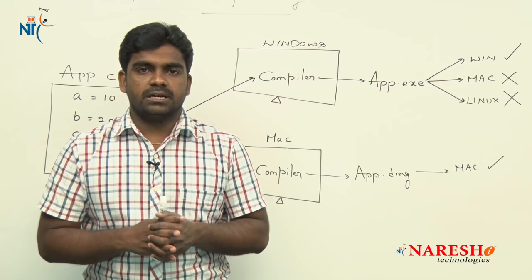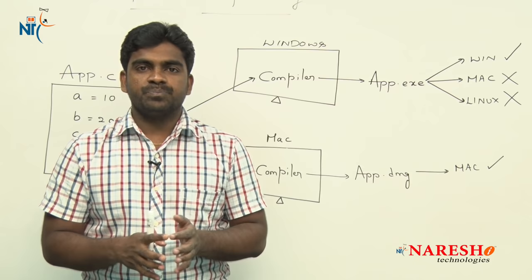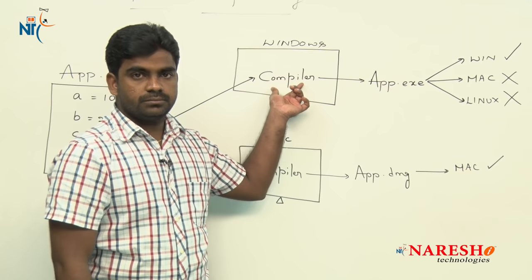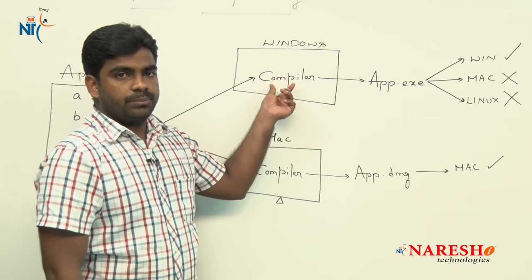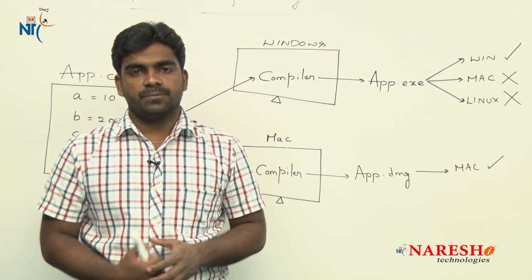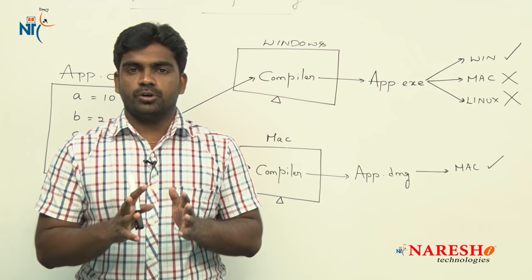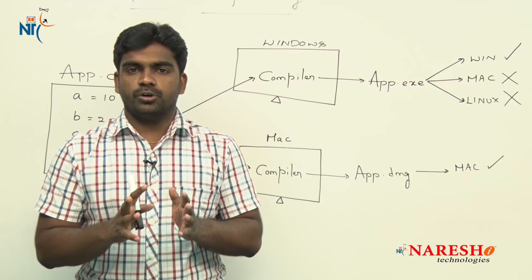This is simply how we can understand and explain platform dependency in an interview. C applications run only on a specific platform because of compiler dependency — on whichever platform you compile the application, on that same platform only you can run it, because the compiler converts source code into a specific OS-understandable instructions. This is all about platform dependency. Hope you understood. For more videos, please subscribe to the Naresh IT channel. Thank you.